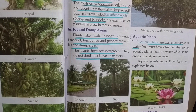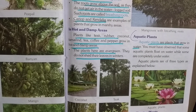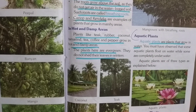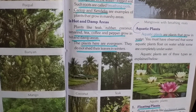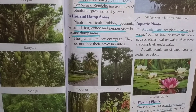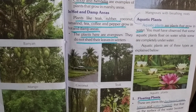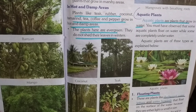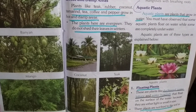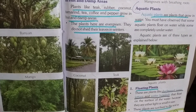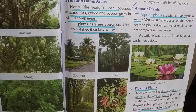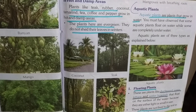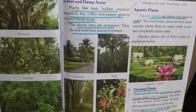In hot and damp areas, plants like tea, rubber, coconut, tamarind, coffee, and pepper grow. The plants here are evergreen — they do not shed their leaves in winters. For example: coconut, tea, rubber, and pepper.